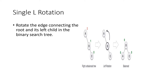Next is single L rotation, where L is left. Rotate the edge connecting the root and its left child in the binary search tree. Here is the example. The balance factor of A is 2, so this is an unbalanced tree. To make it balanced, rotate node A to the left side. Then B is the root node and A, C are the leaf nodes and the balance factors of A, B, C are 0. So this is a balanced AVL Tree.